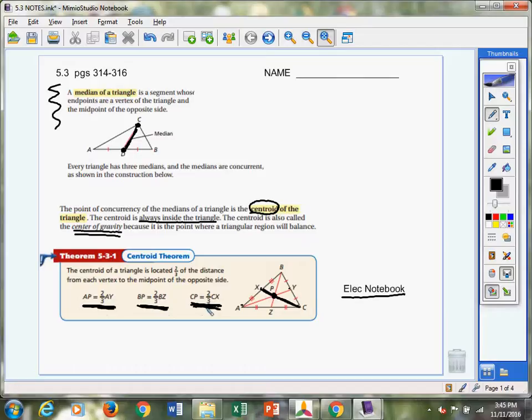So, the number two-thirds is going to play a big part of the centroid. Centroids don't split those medians in half, but they split them into two pieces. You have one piece that's a third of the whole thing, and the other piece is two-thirds of the whole thing. So, which is really interesting.